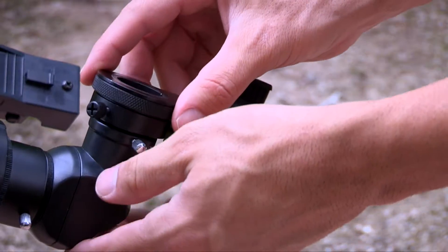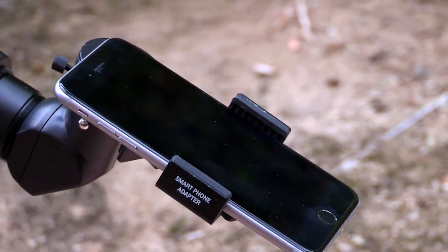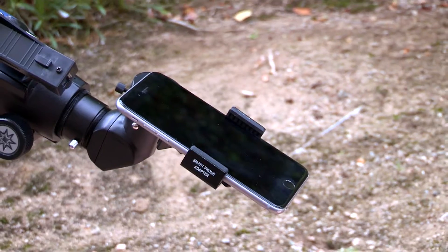This telescope includes Meade's smartphone adapter that allows you to take images of the night sky through the eyepiece. Capture great details of the moon and even the rings of Saturn.